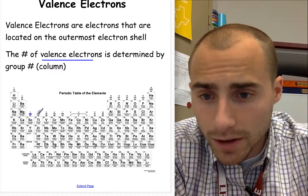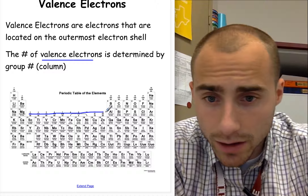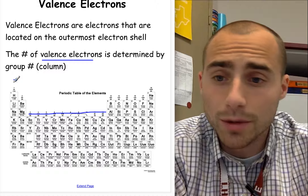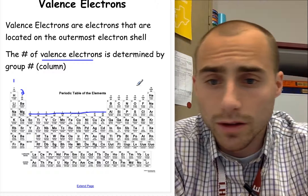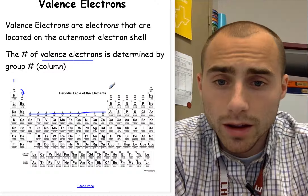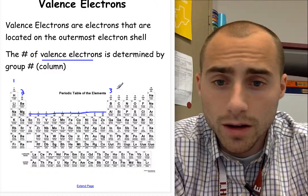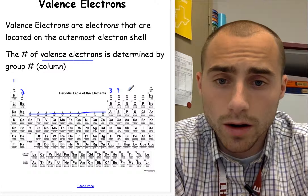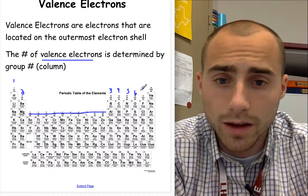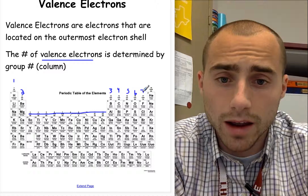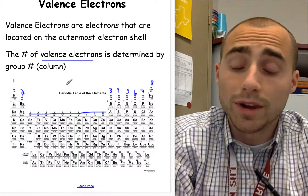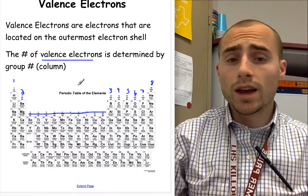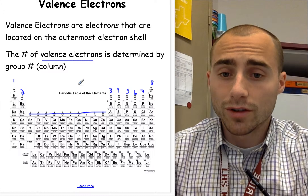The interesting thing is we pretty much ignore all of the transition metals in the middle. I would label this on your periodic table: this is column one, two, three, four, five, six, seven, and eight in our final column. Those are the columns I just labeled — those groups are the ones we care about in terms of the number of valence electrons.